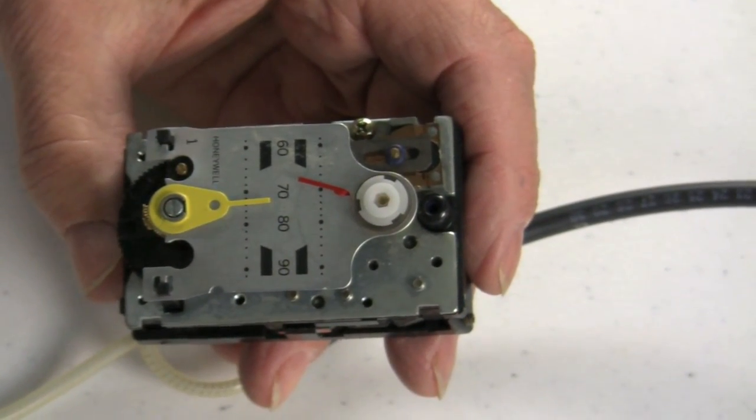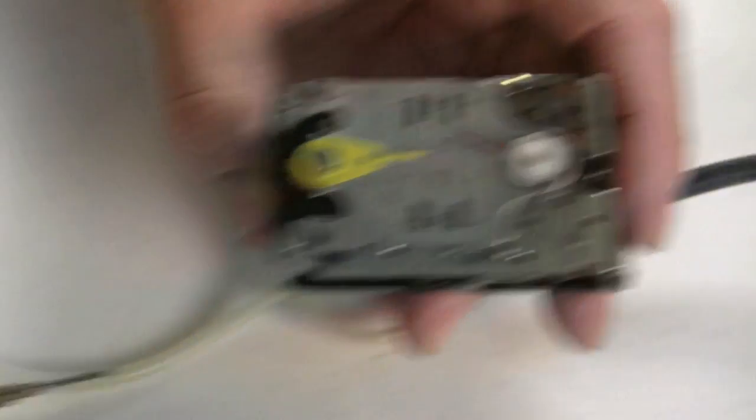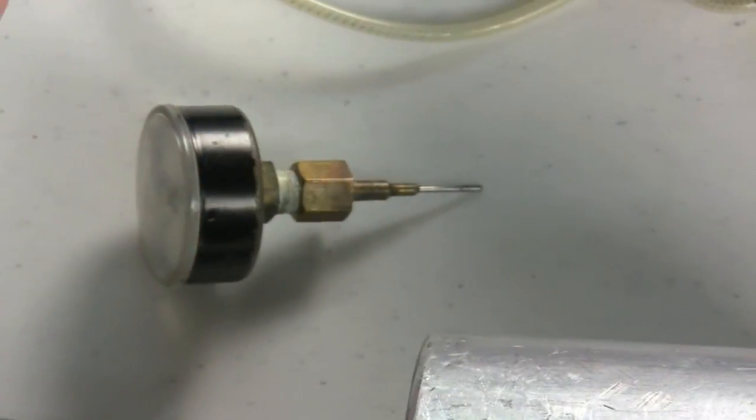To calibrate the thermostat we need the Honeywell gauge adapter, which I have in my hand, and a gauge, and a screwdriver, and we need to know the spring range of our damper, which we'll look at in a second.